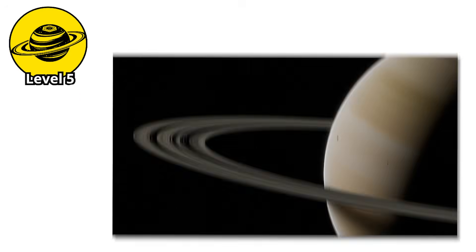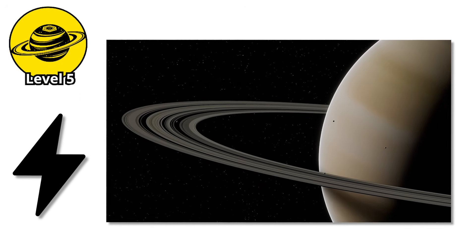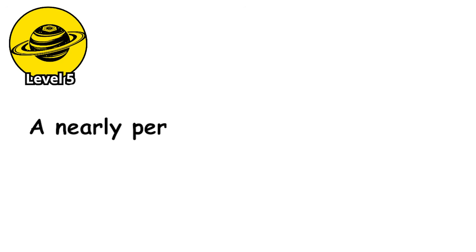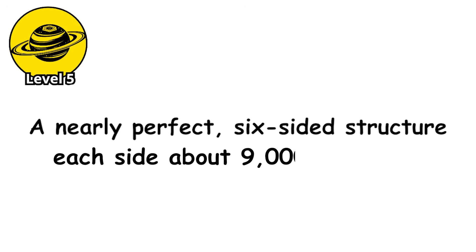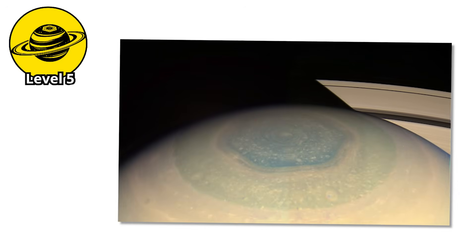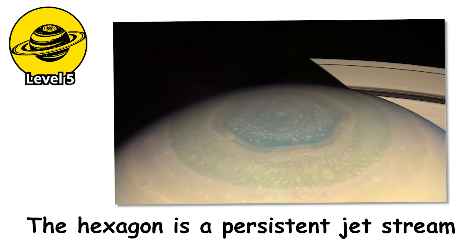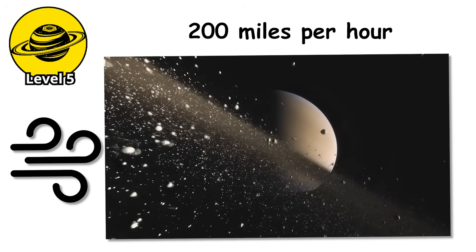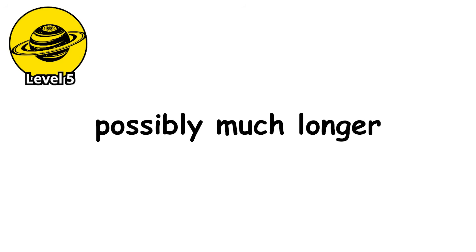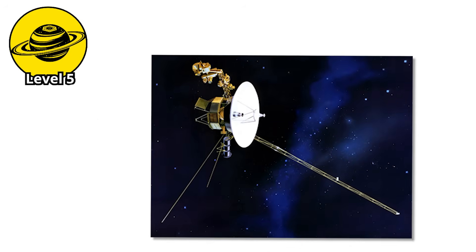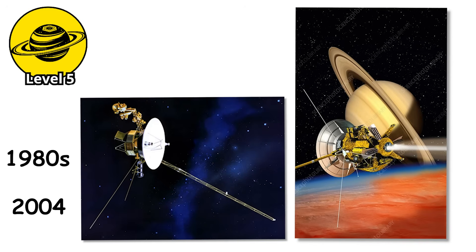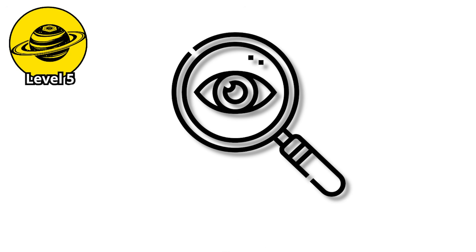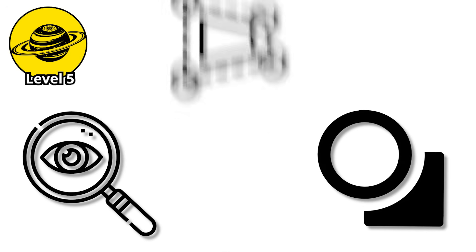Level 5. At Saturn's north pole, there's a storm that shouldn't be geometrically possible. It's a hexagon. Not approximately hexagonal, not hexagon-ish. A nearly perfect six-sided structure, each side about 9,000 miles long, encircling a central vortex at the pole. The hexagon is a persistent jet stream, winds howling at 200 miles per hour, maintaining this bizarrely geometric shape for decades, possibly much longer. We discovered it when Voyager flew past in the 1980s, and when Cassini arrived in 2004, the hexagon was still there, unchanged. It's been continuously observed since then, and it shows no signs of breaking apart or deforming. Laboratory experiments have reproduced similar polygonal patterns in rotating fluids with differential speeds, proving it's a natural phenomenon, but seeing it on a planetary scale is deeply weird.